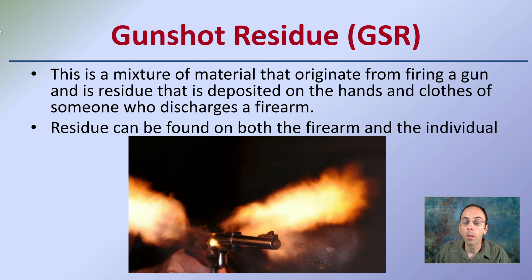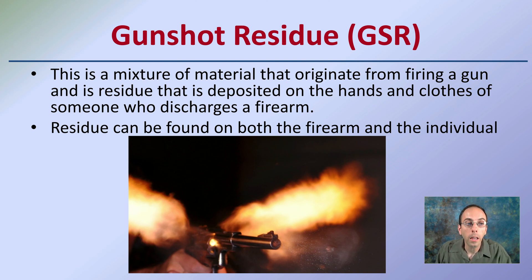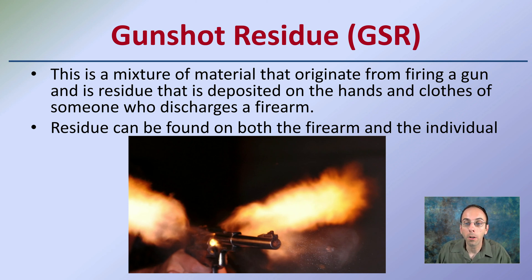Gunshot residue — often abbreviated GSR — is a mixture of material that originates from the firing of a gun. It is residue deposited on the hands and clothes of someone who discharges the firearm, and really anything nearby. Residue can be found on both the firearm and the individual. This image of another revolver shows the angle of projection of that residue, and here the bullet is caught right in motion, giving you a good idea of just where it may be deposited.